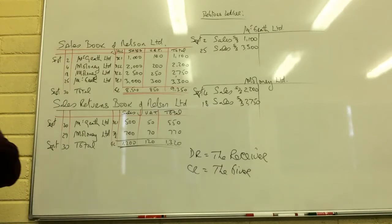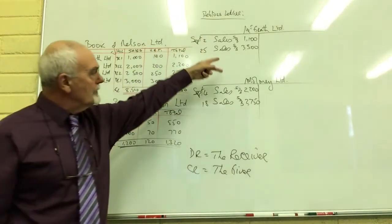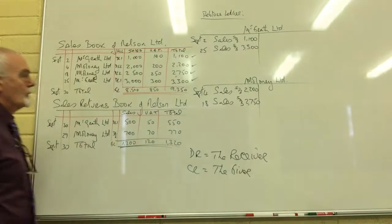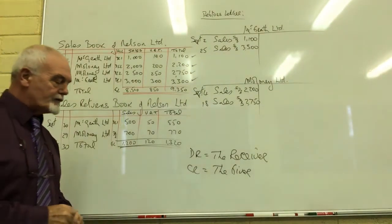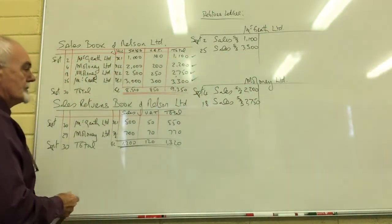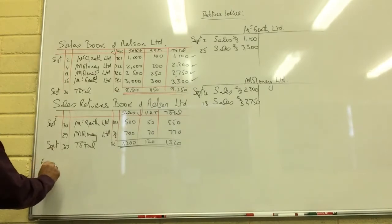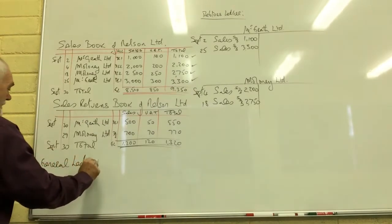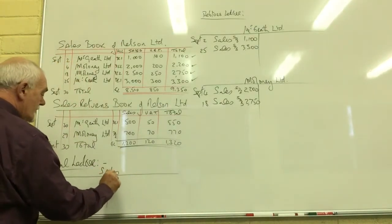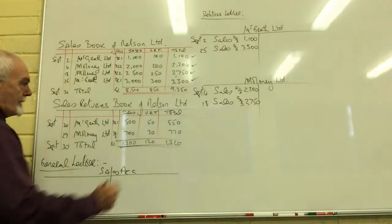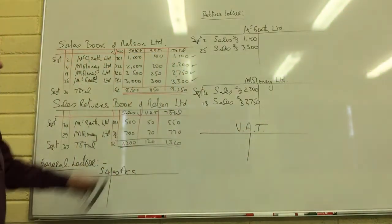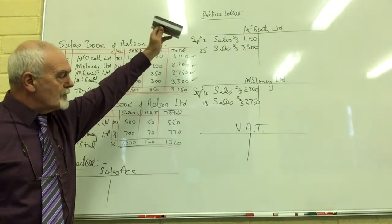We've now done one half of the so-called double entry — we've got our debits done. We have four debits in total. We must match them now with an equal amount of credit entries. I'm going to open up two more accounts in the general ledger: a sales account and a VAT account. Remember I've debited McGrath and Maloney twice each, so we have four debit entries.